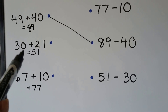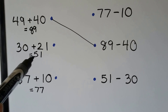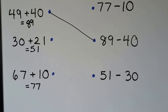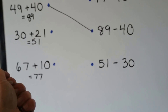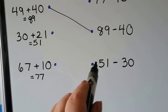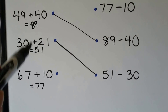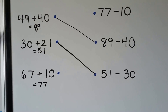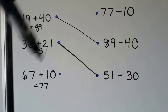For 21 plus 30: counting on three tens gives 21, 31, 41, 51 — equal to 51. We find a sentence with 51 and 30: 51 minus 30, counting back gives 41, 31, 21 — equals 21. That matches. For 67 plus 10: counting on one ten gives 77. The related fact is 77 minus 10 equals 67. Solving and finding the sum or difference helps us match the related facts.